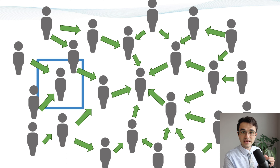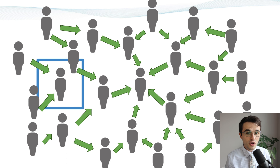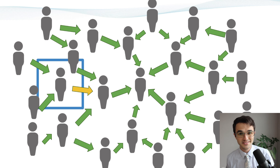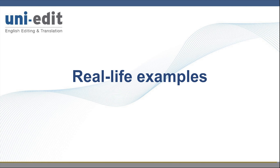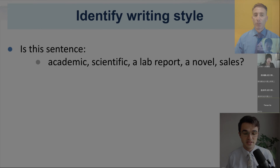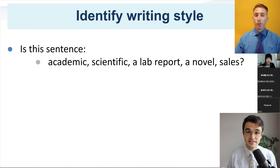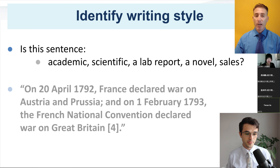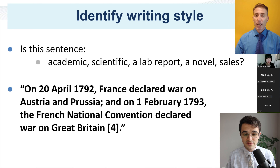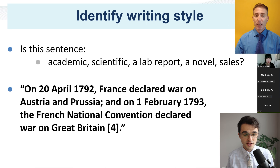You will be taking from other researchers, but also giving to other researchers. To really make the lessons clear, the teacher uses many real-life examples of academic writing and publishing. The teacher will explicitly point out the mistakes commonly made and how to fix those mistakes.